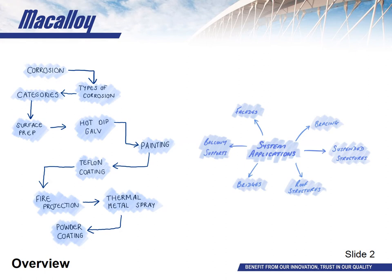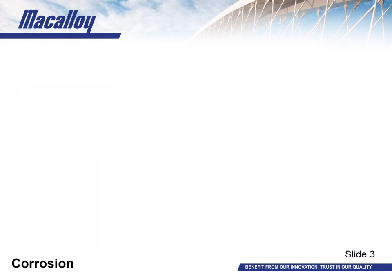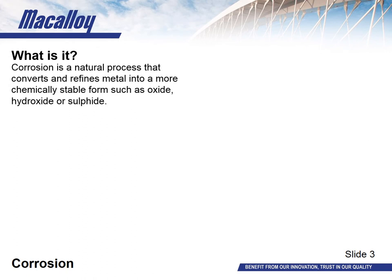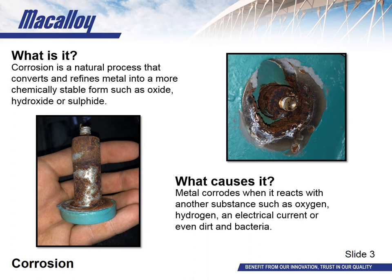On the left hand side you can see the topics we're going to cover, and on the right hand side some of the system applications. Slides are numbered in the bottom right hand corner, so please make a note of the slide number if you have questions and we'll revisit those at the end. Corrosion is a natural process that converts and refines metal into a more chemically stable form such as oxide, hydroxide or sulphide. Metal corrodes when it reacts with another substance such as oxygen, hydrogen, an electrical current or even dirt and bacteria. The images show a pin used in a swimming pool environment bolting two adjoining truss sections. A 316 stainless steel pin was used, however as you can see severe corrosion occurred. The paint was not applied correctly to the carbon truss and as a result bimetallic corrosion transpired. As a result of poor maintenance, moisture was able to pool within the slot of the truss thus leading to crevice corrosion. McEloy were asked to survey the structure and assist in supplying replacements.